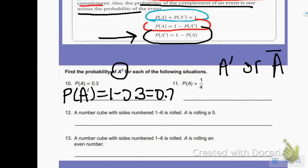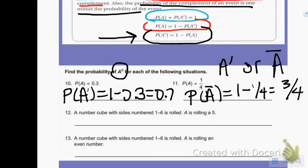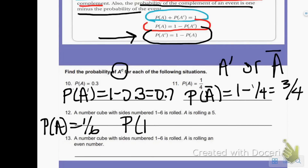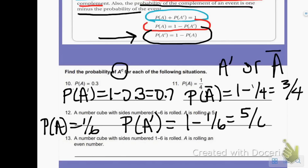Question 12: a number cube with sides numbered 1 through 6 is rolled. Event A is rolling a 5. The probability of A — there's only one 5 — is 1 out of 6. So the probability of the complement of A, written as A prime, equals 1 minus 1/6, which gives 5/6.